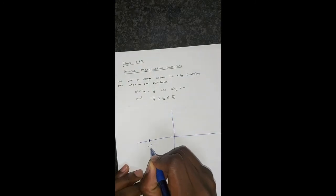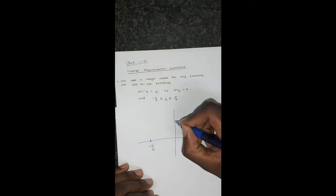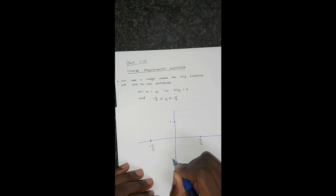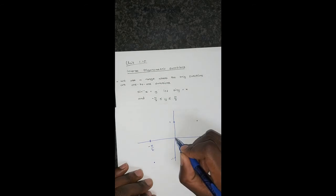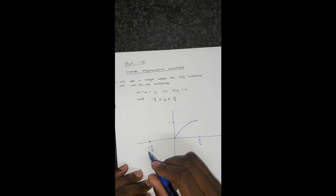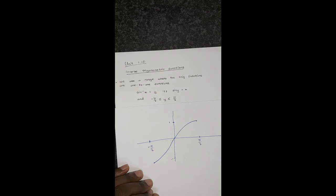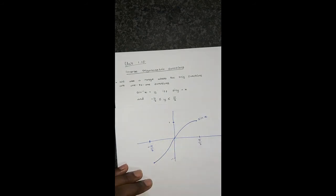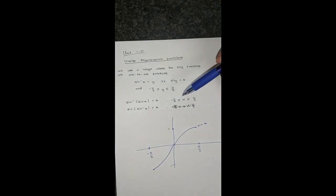So what does the graph of sine look like on negative pi over 2 to pi over 2? We have negative pi over 2 on one side and pi over 2 on the other, with values at 1 and negative 1. The graph climbs up on one side and comes back down. That is the graph of sin(x) on negative pi over 2 to pi over 2. Now we have to plot the graph of arcsin on the same axis.